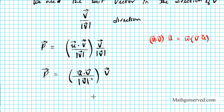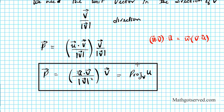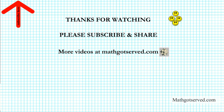This is exactly what we were looking for — this formula is the formula for the projection. The projection of vector u onto vector v equals u dot v divided by the magnitude of v squared, times vector v. We combined the magnitude and direction and simplified it into this form, and that's it. Thanks so much for taking the time to watch this video. Feel free to subscribe to my channel for updates and more vector calculus videos.